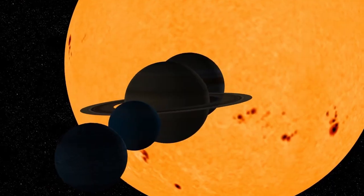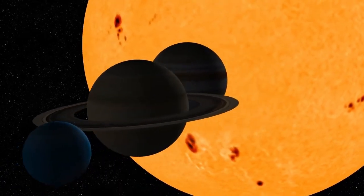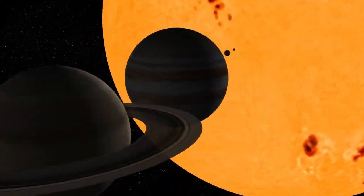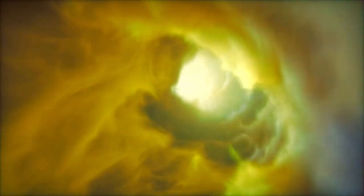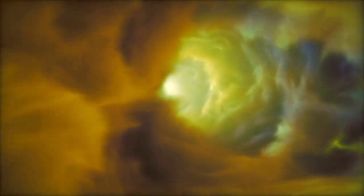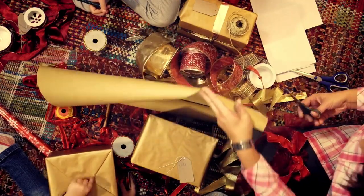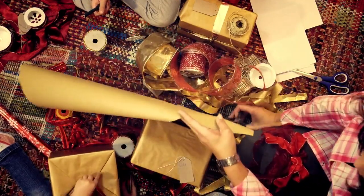In 1989, Voyager 2 reached Neptune, the final stop on its planetary tour. It remains the only spacecraft to visit the blue ice giant. Voyager revealed Neptune's fierce storms, deep blue atmosphere, and winds faster than any in the solar system, reaching speeds over a thousand miles per hour.